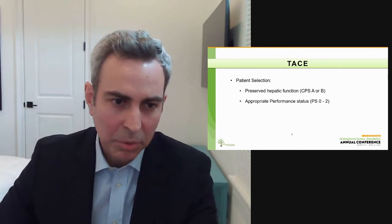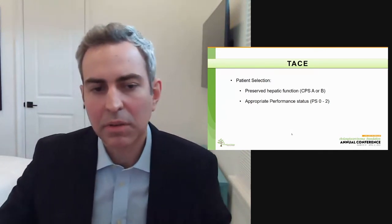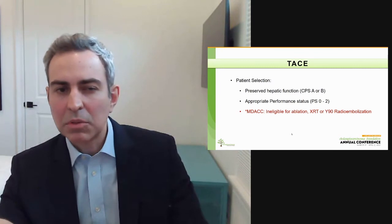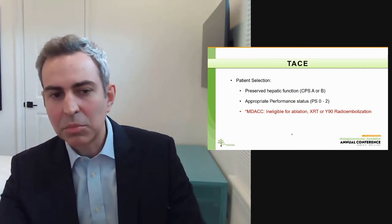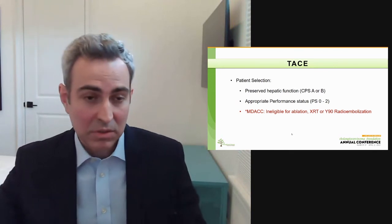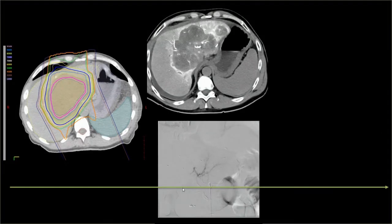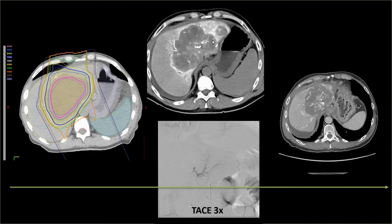Patient selection for chemoembolization requires preserved hepatic function, Child-Pugh score A or B, and appropriate performance status between zero and two — very similar to selection criteria for hepatocellular carcinoma. At MD Anderson, we typically treat with chemoembolization patients who are ineligible for ablation, external beam radiation, or Y90 radioembolization. A typical patient received external beam radiation to a large central tumor with a good response but then developed new left lobe tumors and marginal recurrence. He received re-irradiation plus three cycles of chemoembolization, providing tumor control, and eventually underwent liver transplant after documented disease stability.